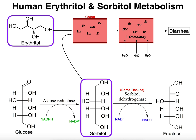Erythritol is not metabolized, but sorbitol on the other hand is metabolized to fructose, and sorbitol can also be produced from glucose. Both of these reactions occur in humans, and this short two-step pathway is what we call the polyol pathway — named because these molecules have many alcohol groups, so they're called polyols.